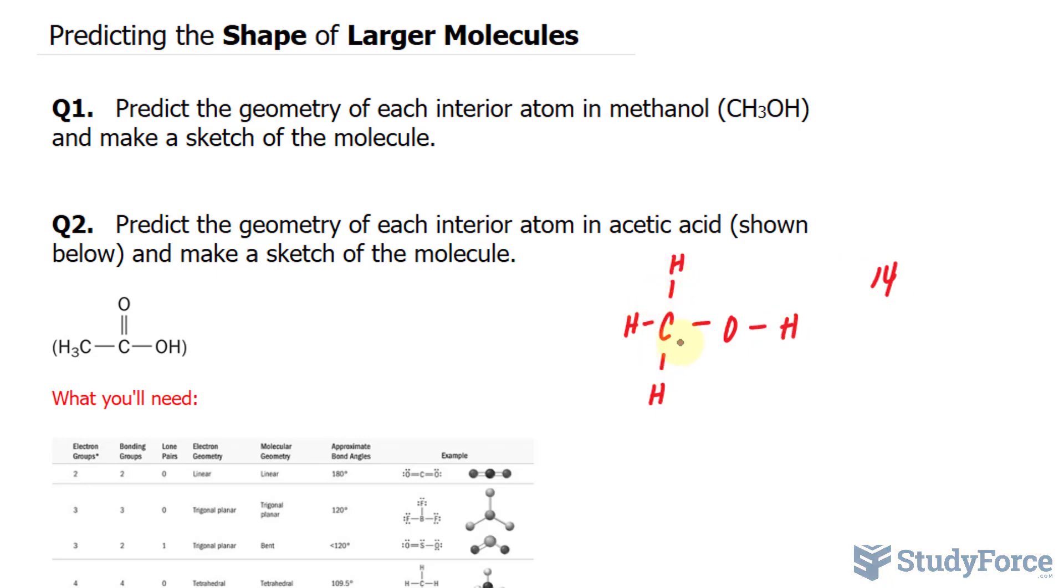Now we've already used up one, two, three, four, five, five times two. We've used up 10 electrons in this structure, which leaves us with four more. And those four will be distributed along the peripheral atoms, namely this oxygen atom. So that is the general Lewis structure of methanol.